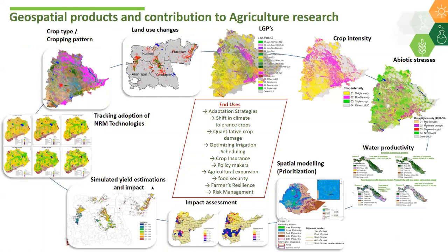After that I'll show some traditional methods and machine learning algorithms, and some outputs. Finally, I will show how these base products will be useful for agriculture development and as important inputs for crop modeling and other spatial analysis. The major products we are working on are mainly major crop type mapping as the primary task.